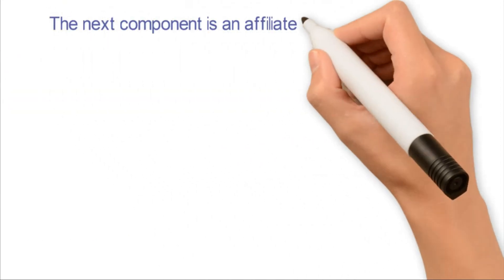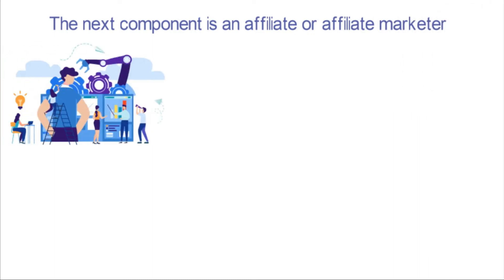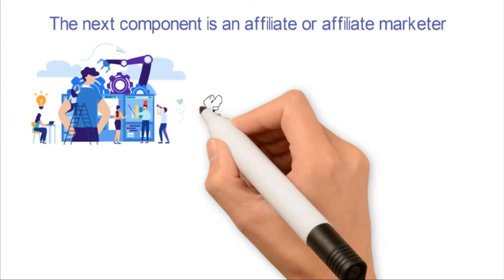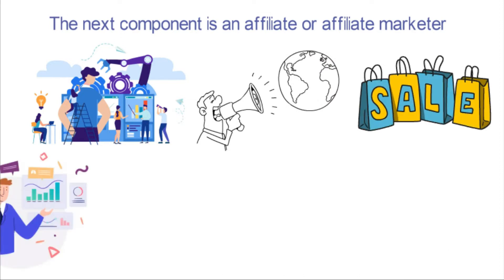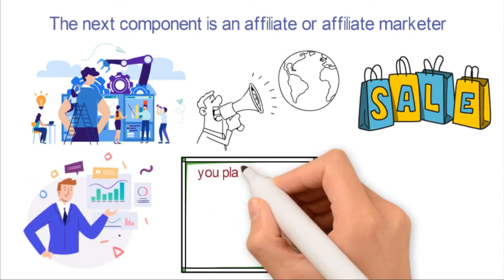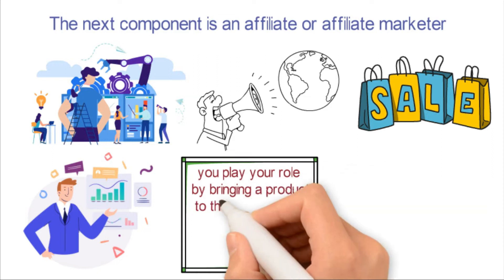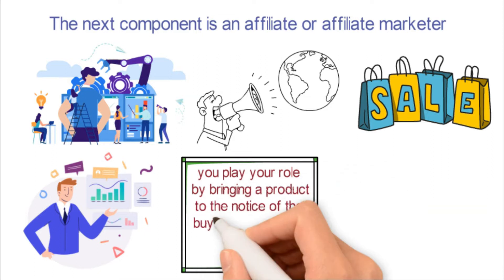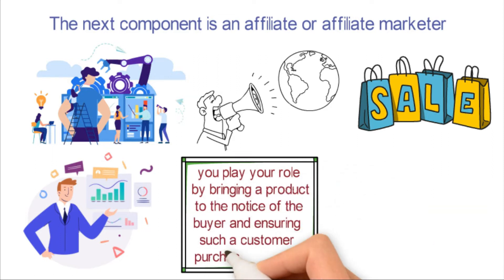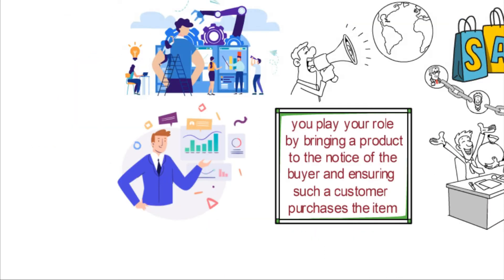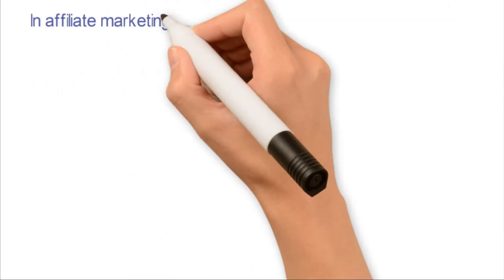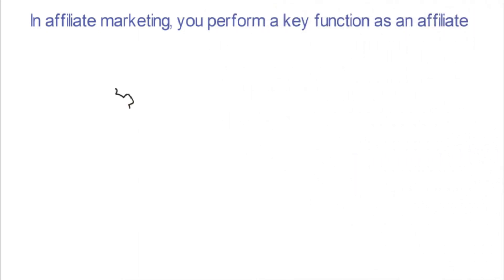The next component is the affiliate, or affiliate marketer. An affiliate is someone who selects a manufacturer's products and promotes them to buyers who make sales. As an affiliate marketer, you play your role by bringing a product to the notice of the buyer and ensuring such a customer purchases the item through your links. After the purchase, you receive your commission. In affiliate marketing, you perform a key function as an affiliate, and to do it better, you need to acquire some skills that will ease your task.